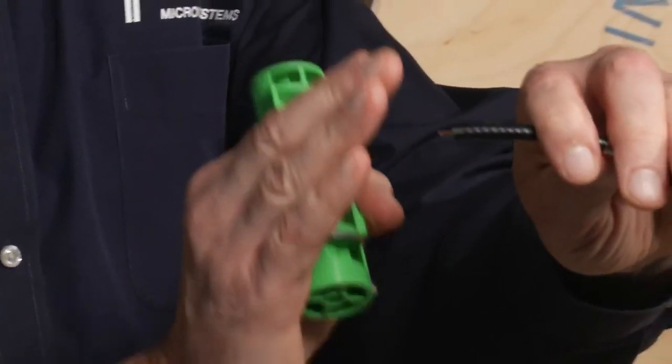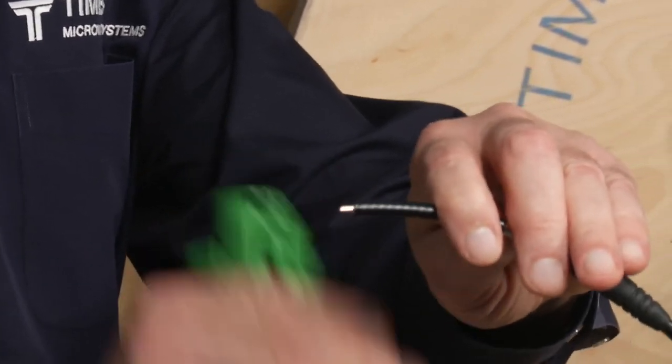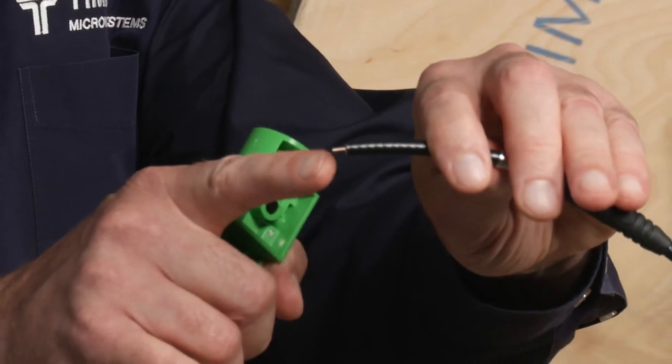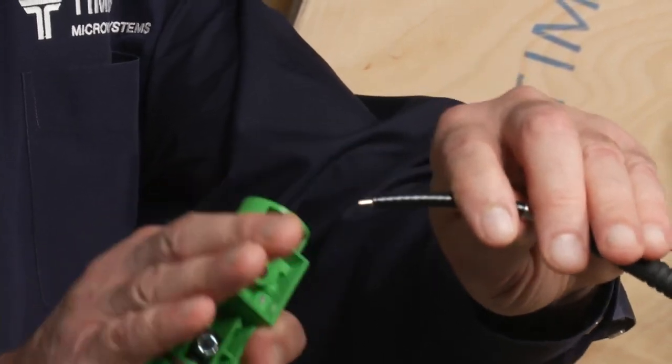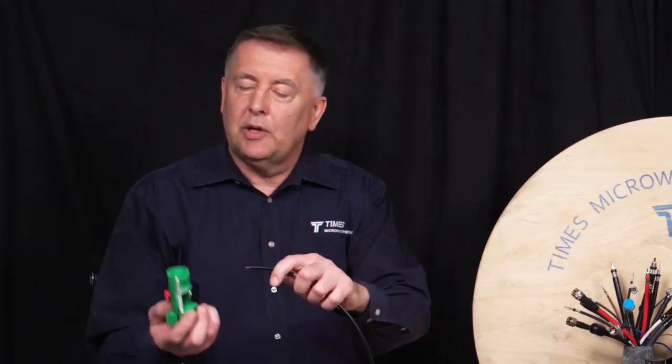Now you've exposed that center conductor and done it in such a way we didn't crush the outer conductor at all. Nice clean sharp cut. As you may see, the center conductor is completely straight and burr-free, which is what we want. Take the tool, you flip it around to side two.